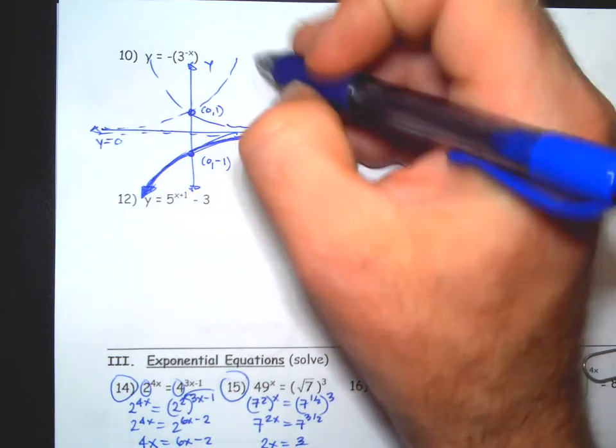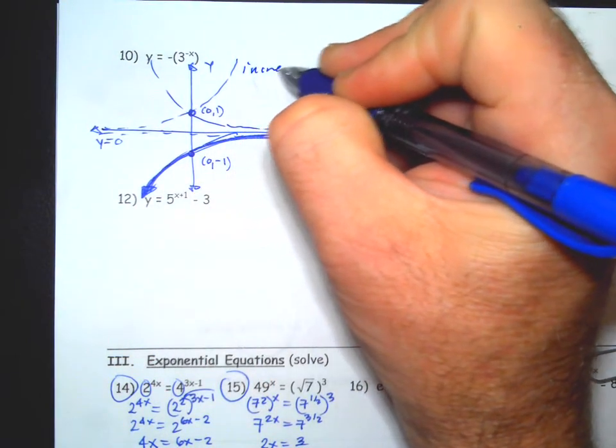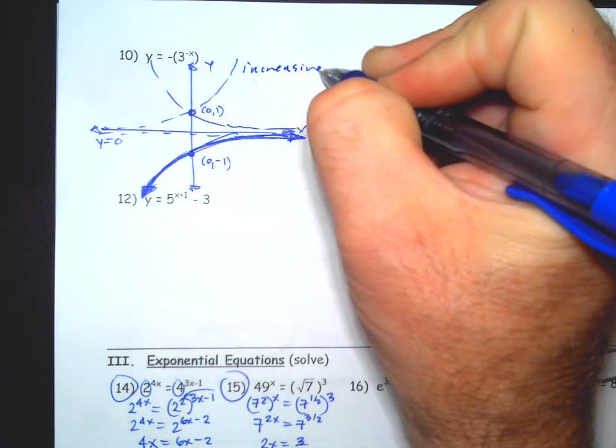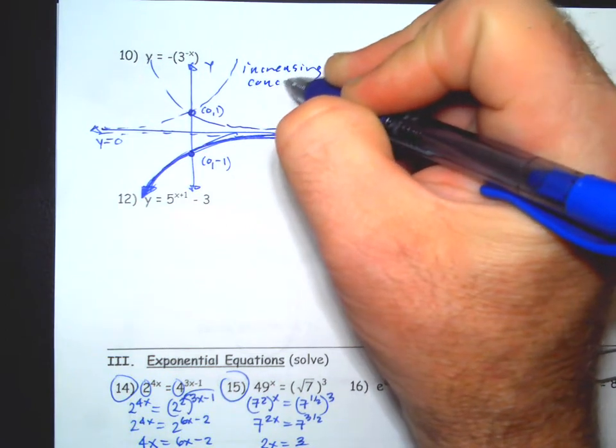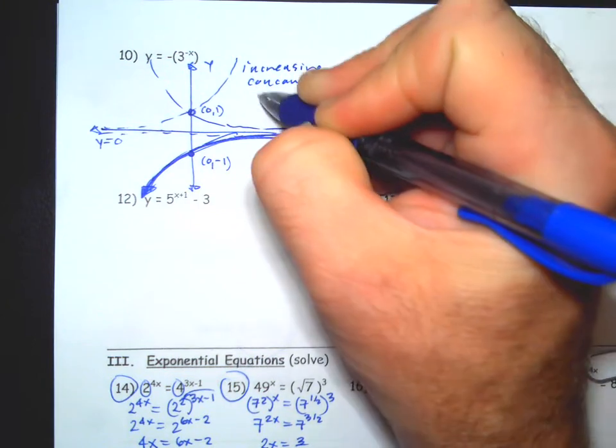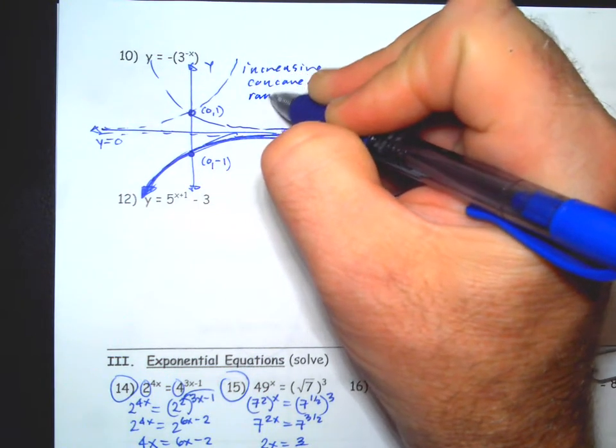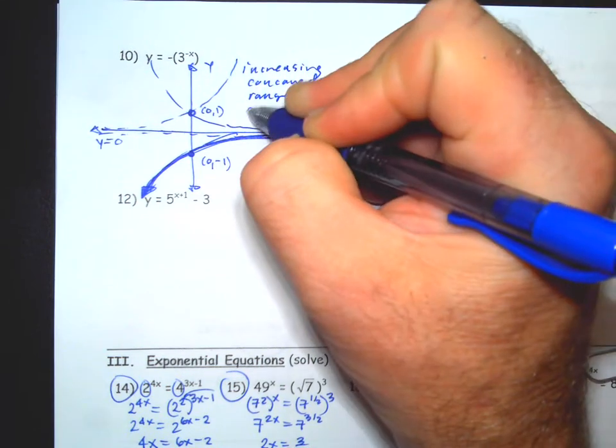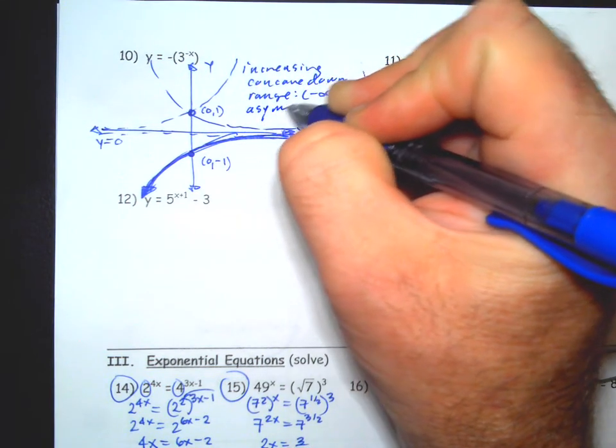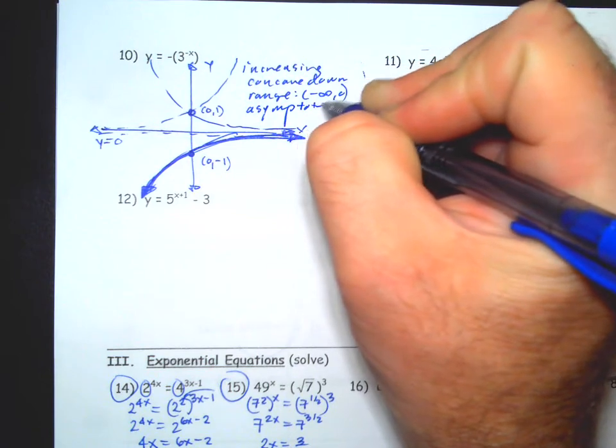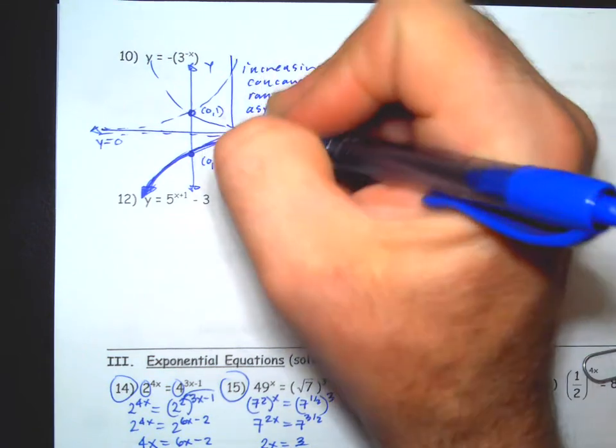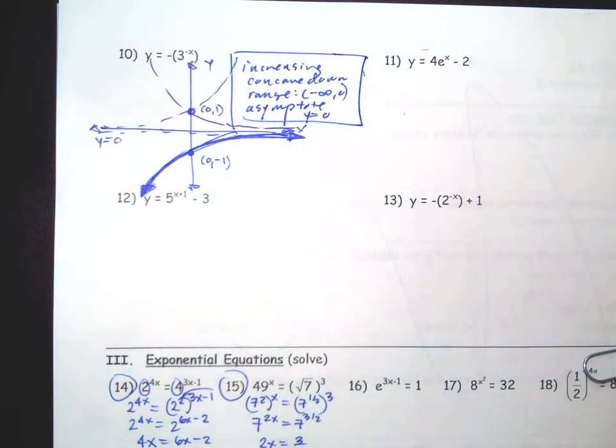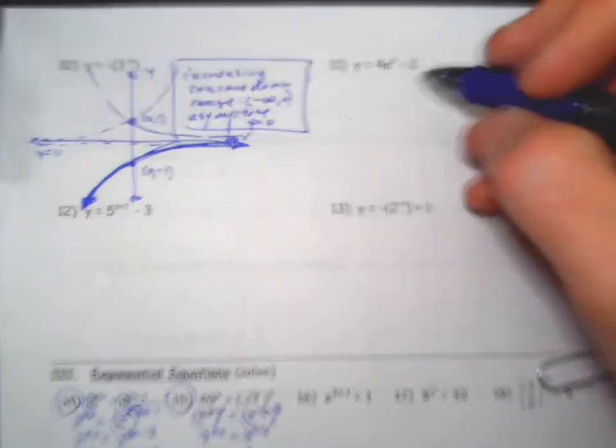There you go. Increasing, concave down. Range is negative infinity to zero. Asymptote is y equals zero. You guys getting the hang of it? Next one, we're doing the same kind of stuff we're doing last chapter.